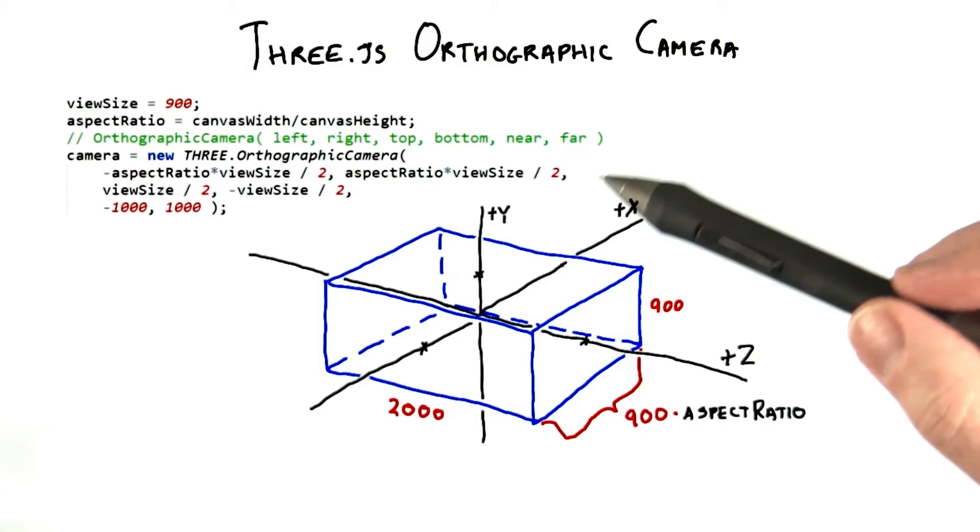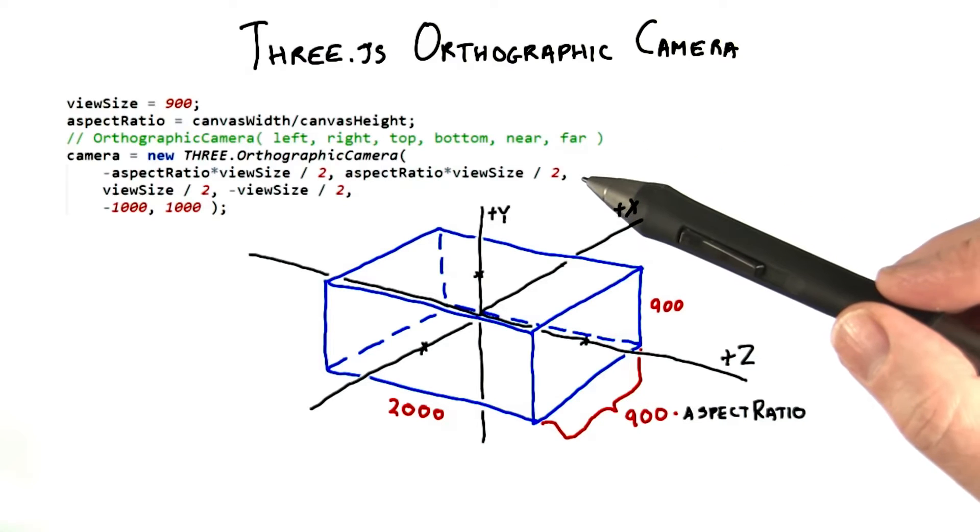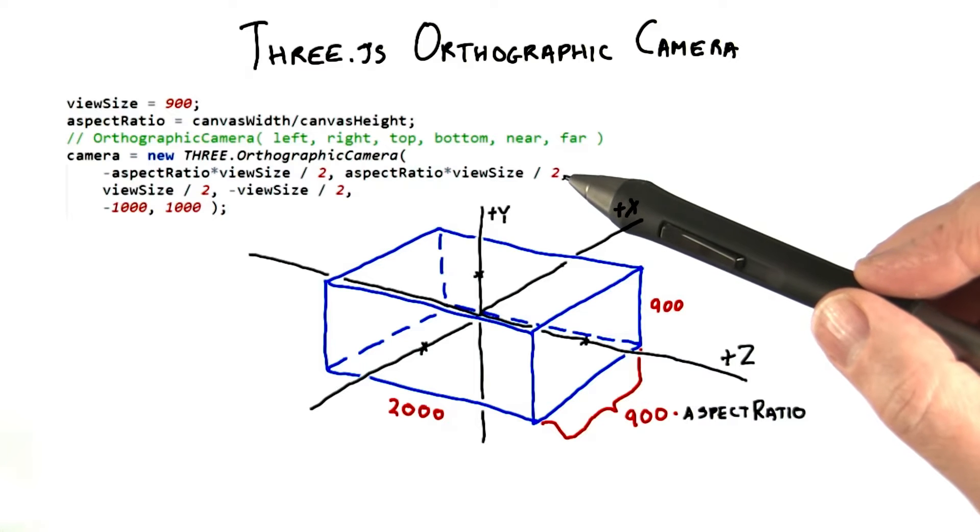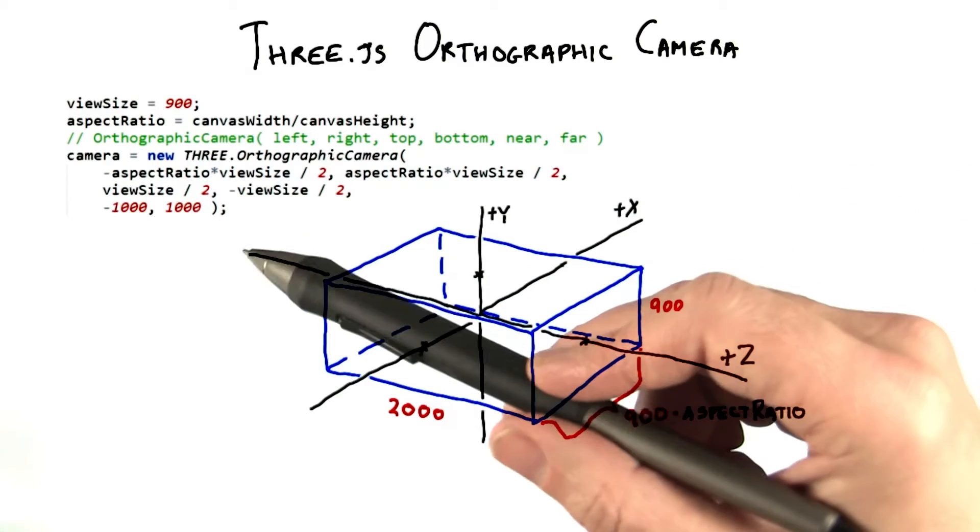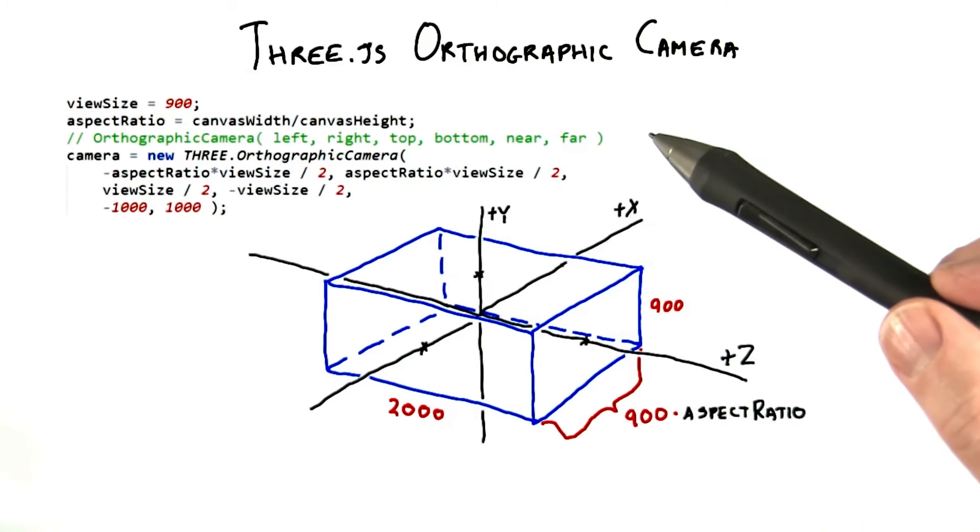This first piece of code creates the orthographic camera and defines the rectangular box of space it's viewing. This box is defined by the left to right width limits, the top to bottom height limits, and front to back limits, all in world space coordinates.